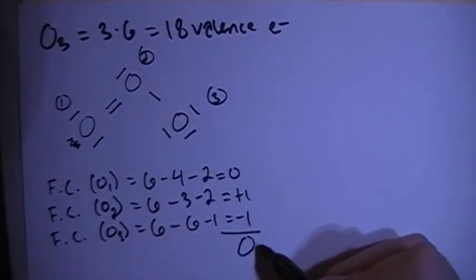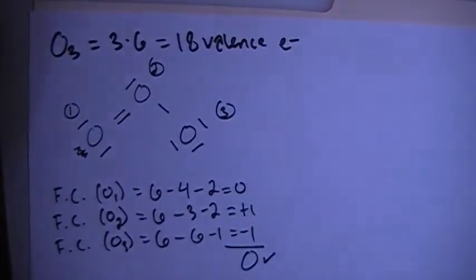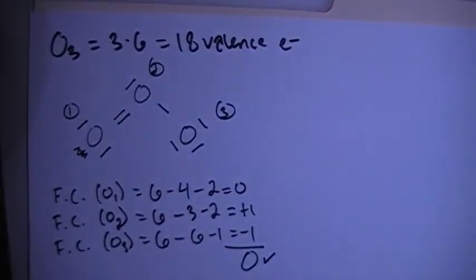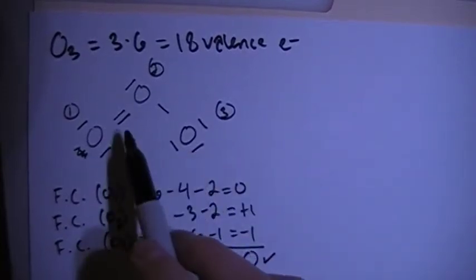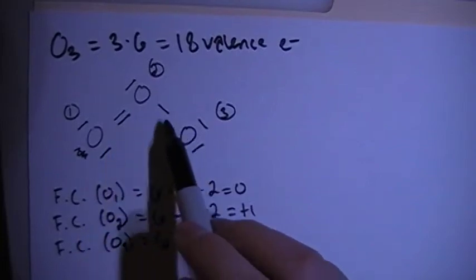If you add those up, it gives you a formal charge of 0 overall, which is what we needed because this is a non-charged compound. So that's what we're looking for, but now, notice how we chose to have this oxygen 1, this left oxygen, to have the double bond and not this right one.